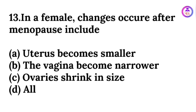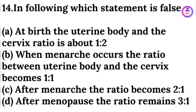In females, changes occurring after menopause include: the uterus becomes smaller, the vagina becomes narrower, and the ovaries shrink in size — so all of these. Which statement is FALSE? After menopause, the ratio remains 3 to 1 — that is the answer; rest all statements are TRUE.